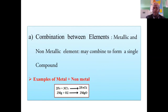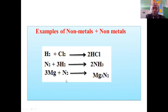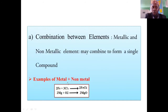The combination of metallic and non-metallic elements: when a metal reacts with a non-metal, they combine to form a single compound. For example, iron reacts with chlorine to form iron chloride.